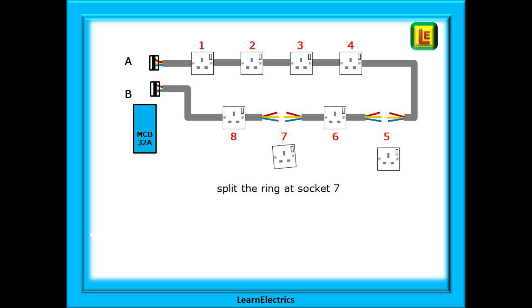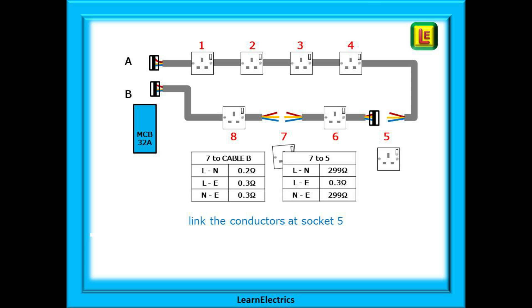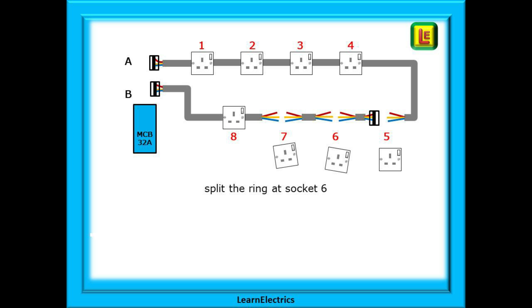Now split the circuit in half again, this time at socket number seven. Link the conductors at socket five as shown, and now test the conductors in pairs between socket seven and cable B, and then between socket seven and socket five. The two mini charts show our example results: seven to cable B appears okay, but seven to five has high values again. The fault must be between socket seven and socket five. We're closing in on the problem.